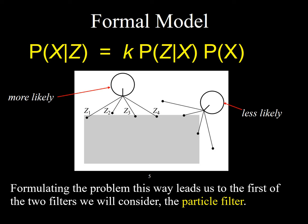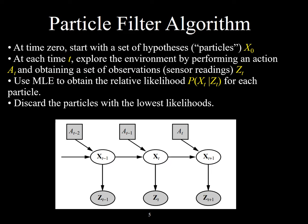Instead of just having two different hypotheses — two different poses — if you think about a lot of them, we get something called a particle filter. A particle filter basically says we start out with a whole bunch of essentially random hypotheses — positions and orientations — at some initial starting time, call it time zero. At each new time t, we explore the environment, the robot drives around, turns, moves back and forth, taking actions. That action causes it to be in a new state with a new position, orientation, and a new set of sensor readings.